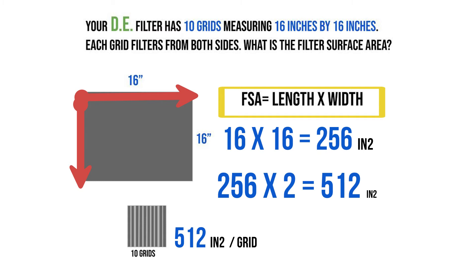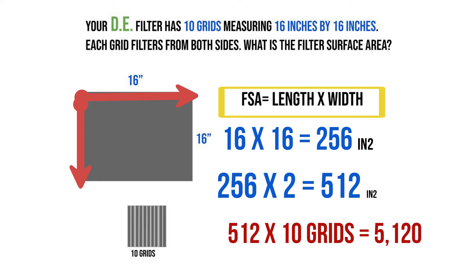Each grid is 512 square inches. To get the entire filter surface area, we're going to multiply this by how many grids we have, which is 10, because that's what the problem states. So if we multiply 512 by 10, we get 5,120 square inches.